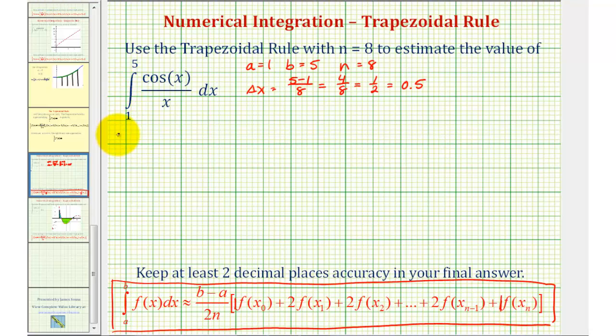Now let's go ahead and list all of our values from x sub 0 through in this case x sub 8. So x sub 0 would be equal to a, or 1, and now we'll just add delta x each time to find the subsequent x value. So x sub 1 would be 1 plus 0.5 or 1.5, x sub 2 would be 2, x sub 3 would be 2.5, x sub 4 would be 3, x sub 5 would be 3.5, x sub 6 would be 4, x sub 7 is 4.5, and finally x sub 8 is equal to 5, which is also b.